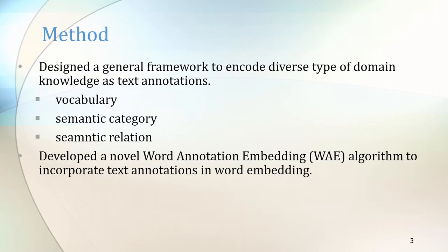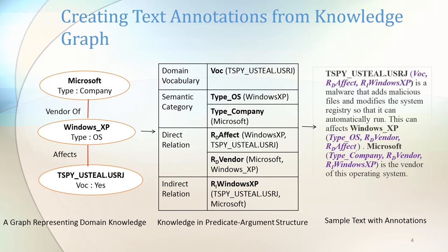We designed a general framework to encode diverse types of domain knowledge such as vocabulary, semantic category, and semantic relation as text annotations. Then we developed a word annotation embedding algorithm to incorporate text annotations in word embedding. To create text annotations from a knowledge graph, we first extract knowledge from the knowledge graph in predicate argument structure, and then from this structure, we incorporate the annotations in our text corpora.